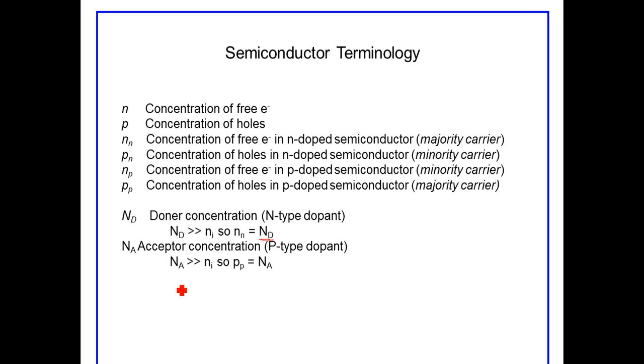N sub A, the donor concentration of dopant, will be significantly greater than the intrinsic value. So the concentration of holes in a P-type semiconductor will be very close to the dopant concentration, the P-type dopant concentration in the P-type semiconductor.